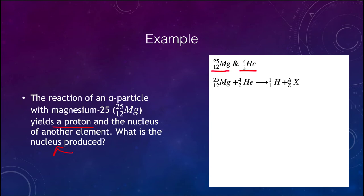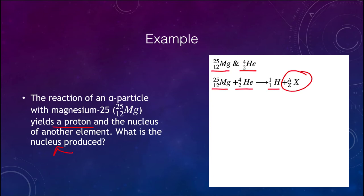We can write our equation as: magnesium plus helium yields a proton plus something unknown. That unknown element X has mass number A and atomic number Z, and those are what we need to find. Let's first balance the mass number by looking at the superscripts.